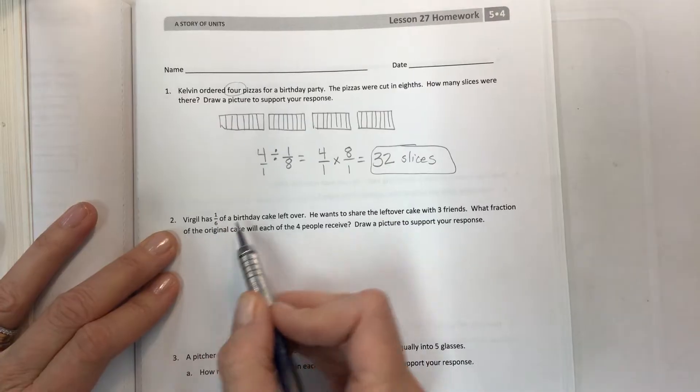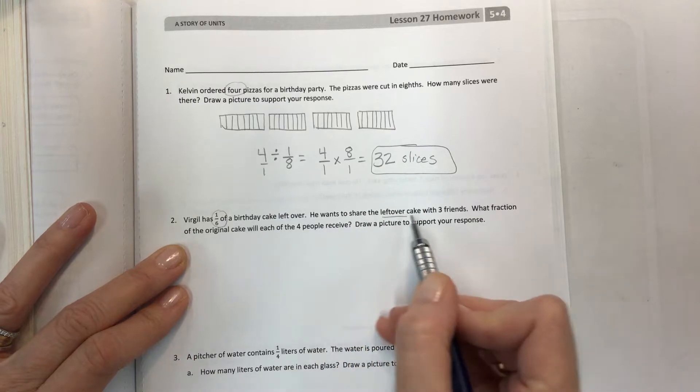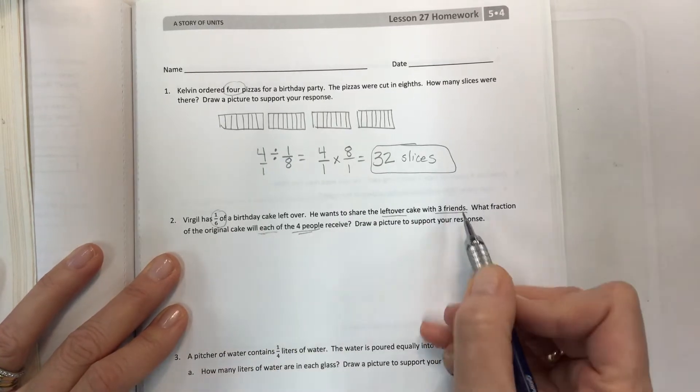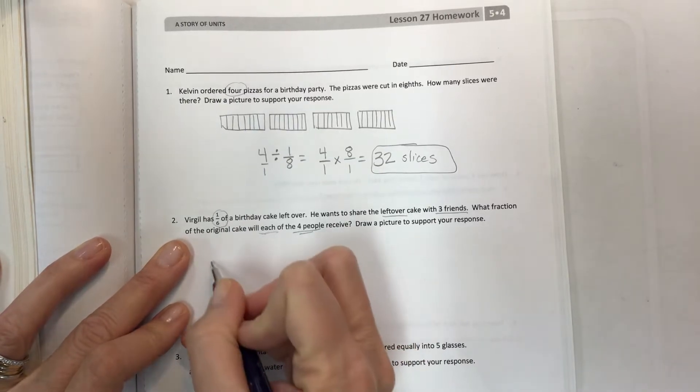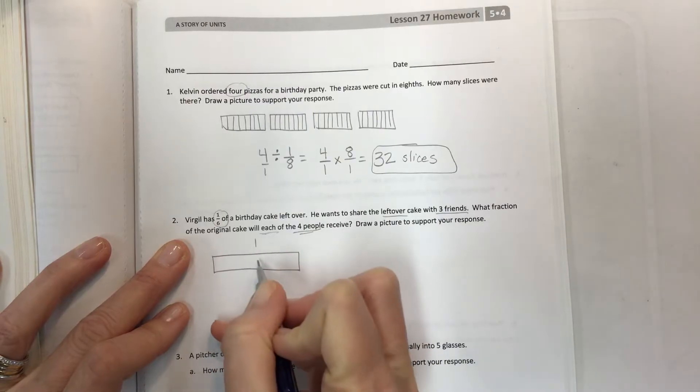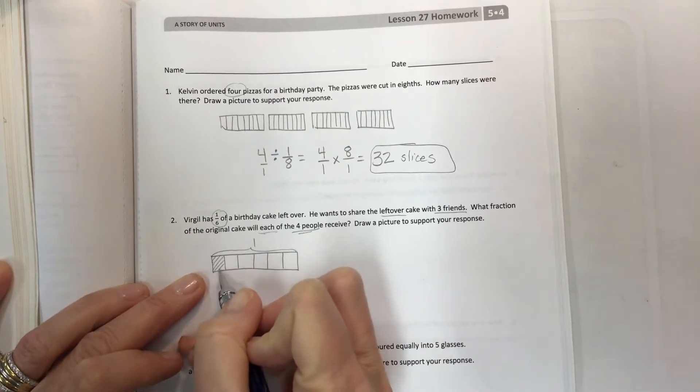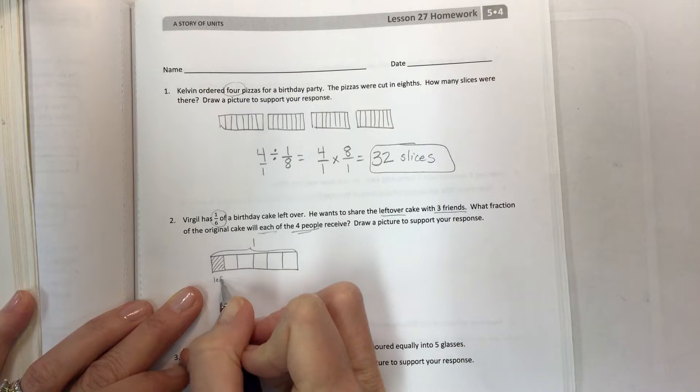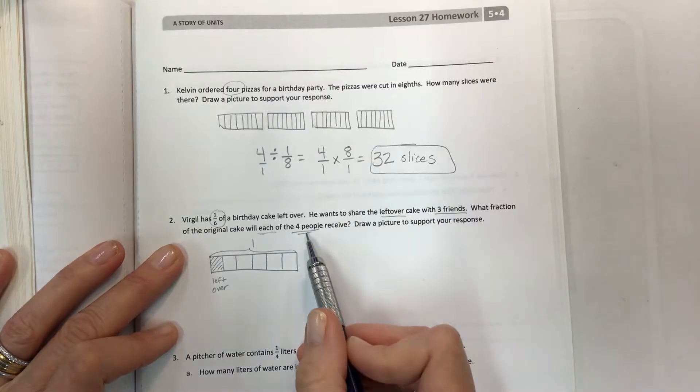Number two, Virgil has one-sixth of a birthday cake leftover. That's what he has. He wants to share the leftover cake with three friends. What fraction of the original cake will each of the four people receive? So Virgil is going to have some too. Draw a picture to support your response. Now when you only have one-sixth of a cake, then what you have is you have one thing and it's divided into six pieces. And this is what you would shade. So you have one-sixth here and this is what's leftover.